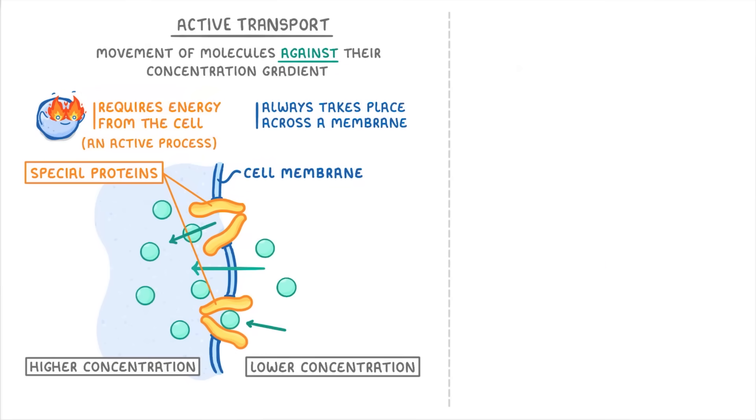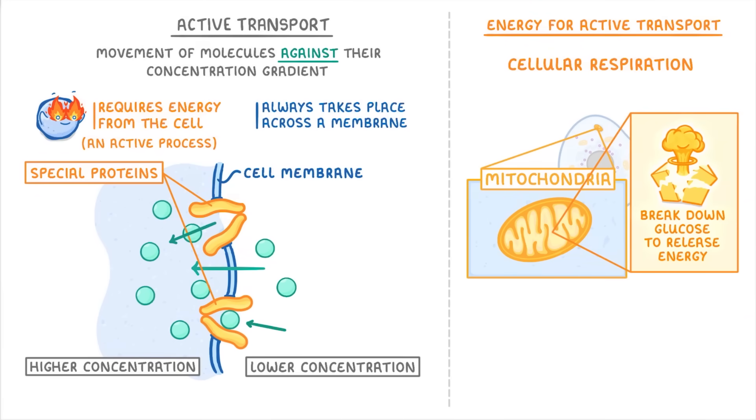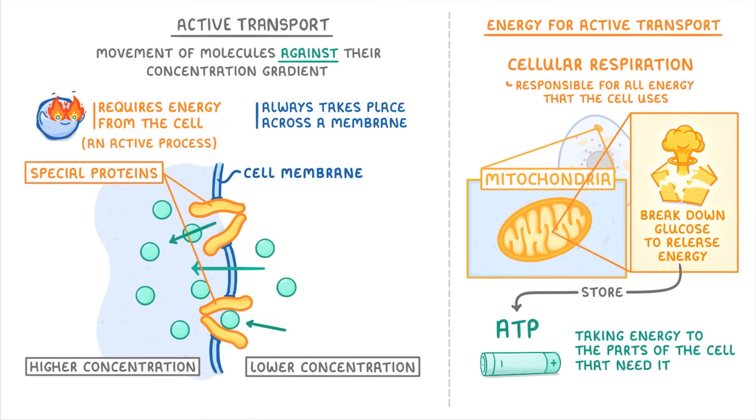Something else to say here is that like all energy in the cell, the energy for active transport comes from cellular respiration, which is the process that happens mainly in the mitochondria when they break down glucose to release energy. We cover it in more detail in another video. But for now, just remember that the process is responsible for all of the energy that the cell uses, and that it stores that energy in little molecules called ATP. These molecules act like little batteries, taking the energy from the mitochondria to the different parts of the cell that need it.